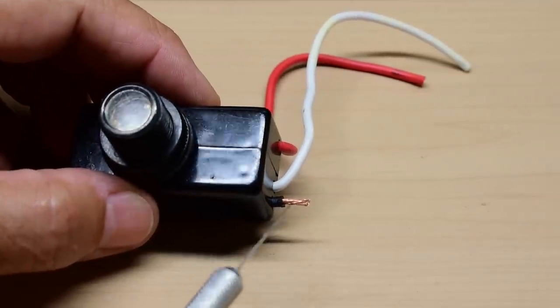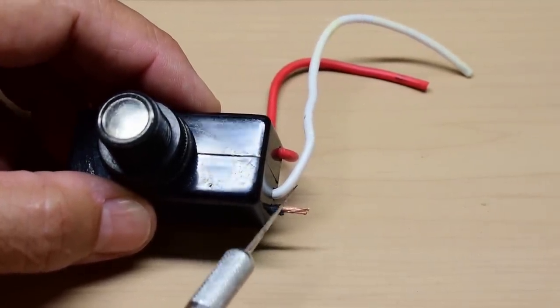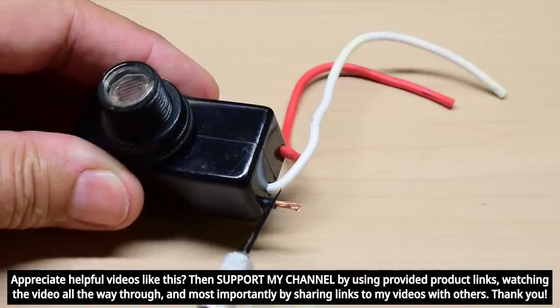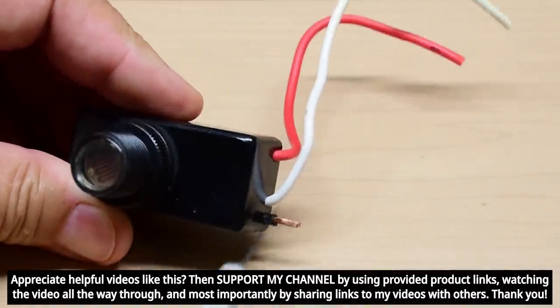Once the wire is stripped, you want to make sure that the copper is very shiny. If it's not bright and shiny, take a razor blade like you see here and just very gently scrape over it.